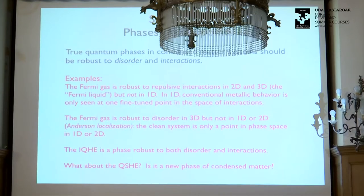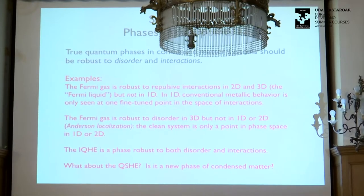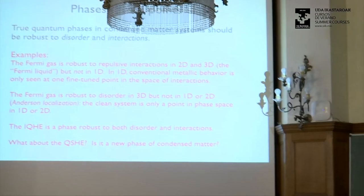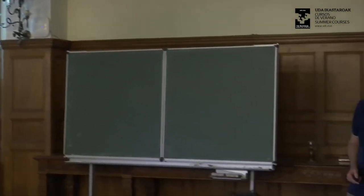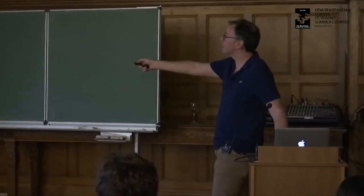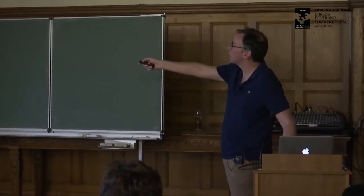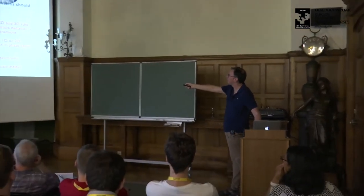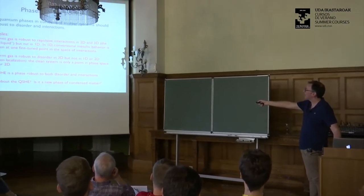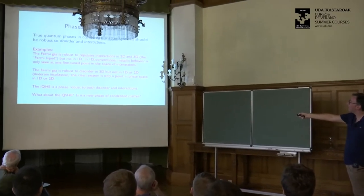One quick question before the magnetoelectric business: so far we've mostly been talking about non-interacting perfect lattices. Let me give you one trick for the integer quantum Hall effect to show that sometimes with very little work you can solve the problem of adding interactions and adding disorder and still use the Berry phase, and then I'll come on to the electromagnetic response.